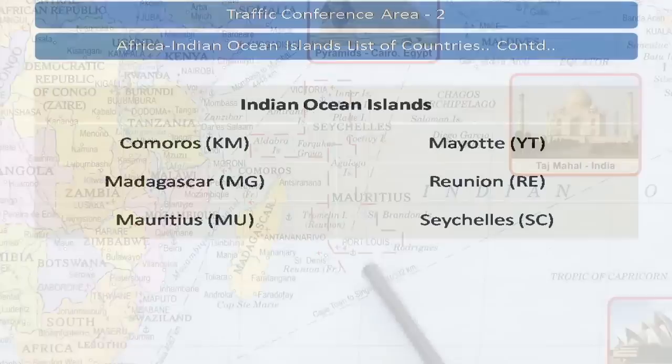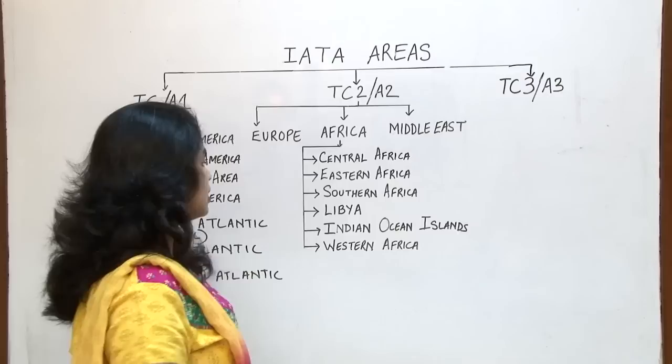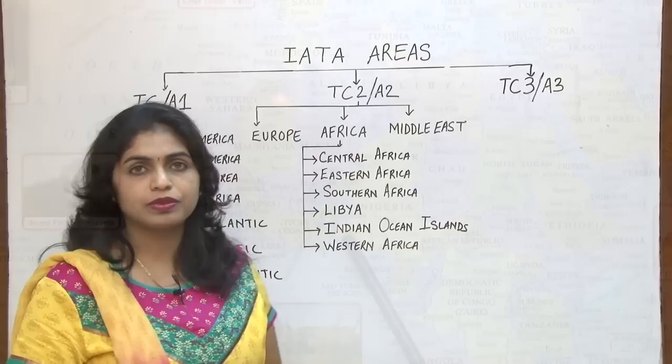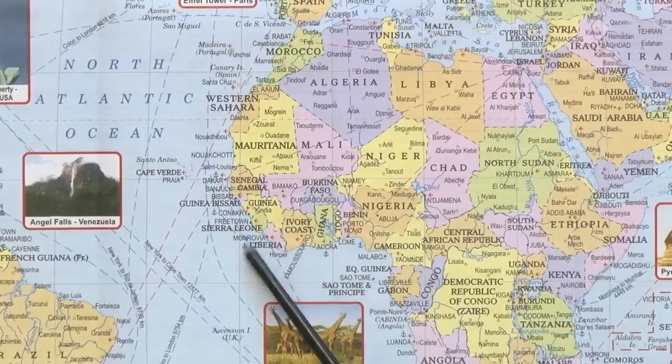Let us now see the countries included in Western Africa. These are the countries which fall under Western Africa — as you can check, these are in the western zone of the African continent. These are the groups which form Western Africa.